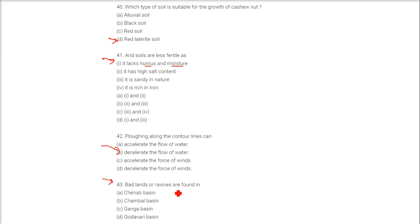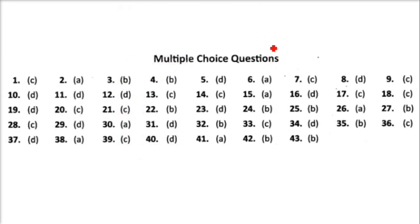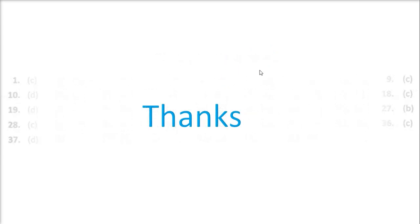Badlands or ravines are found in the Chambal Basin. This is the answer key of the multiple choice questions we just covered. Thank you so much, take care of yourself.